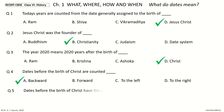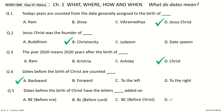Question 5. Dates before the birth of Christ have the letters dash added on. Your options: B.E. (Before Era), B.L. (Before Lord), B.C. (Before Christ), A.C. (After Christ). And the answer is Before Christ — B.C.